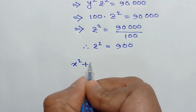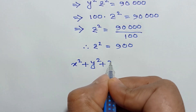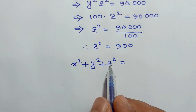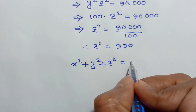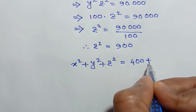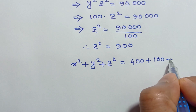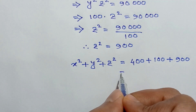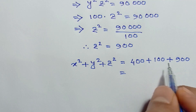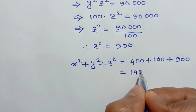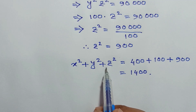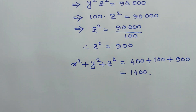Now, x² + y² + z² equals — substituting the values: x² = 400, y² = 100, and z² = 900. So 400 plus 100 plus 900 is equal to 1400. So the value of x² + y² + z² is 1400. If you like this video, please subscribe to my channel. Thanks for watching.